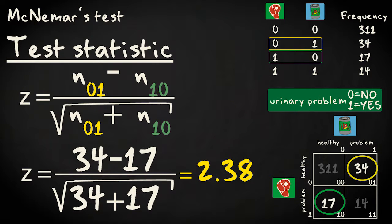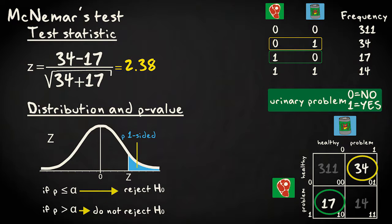When we calculate the actual Z value, we find a value of 2.38. As expected, the value is positive and falls in the right tail of the distribution.